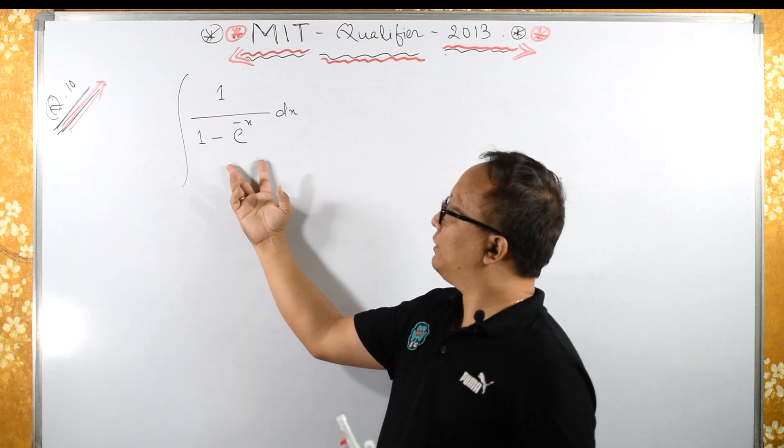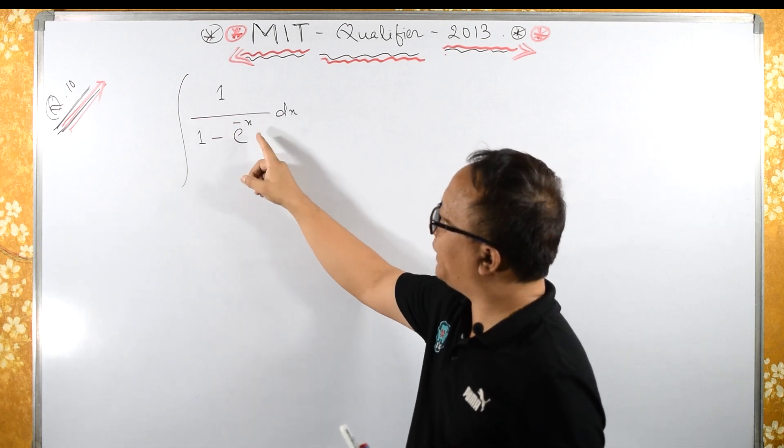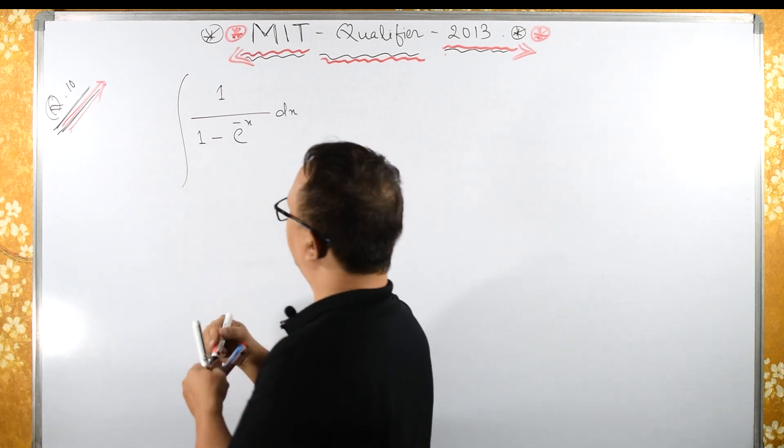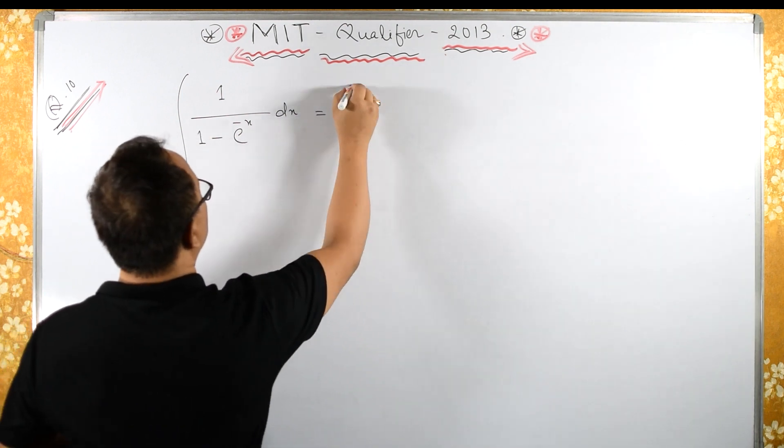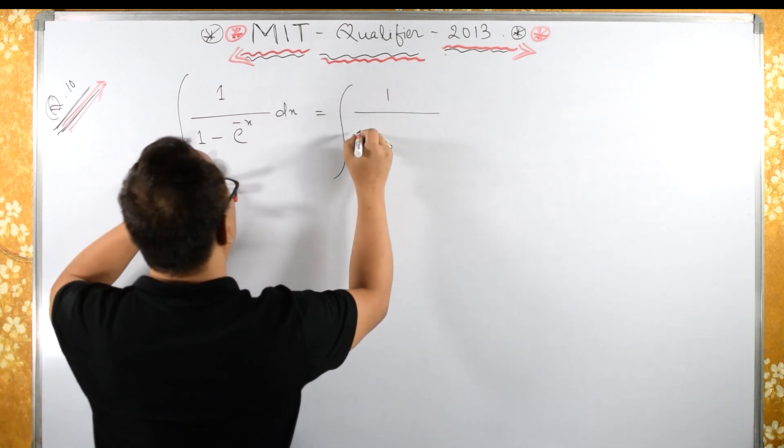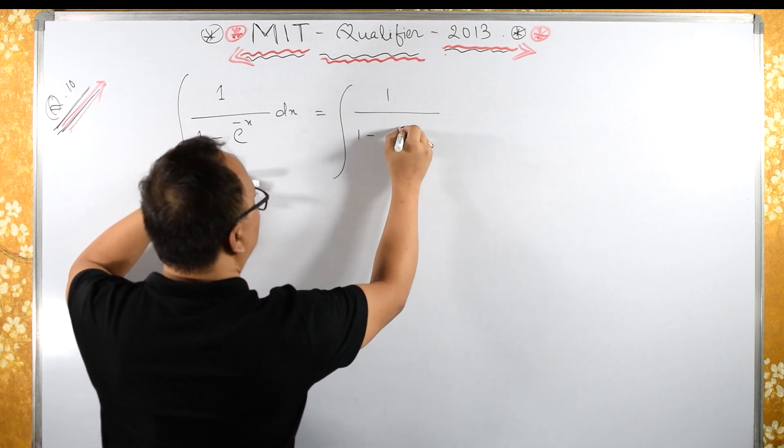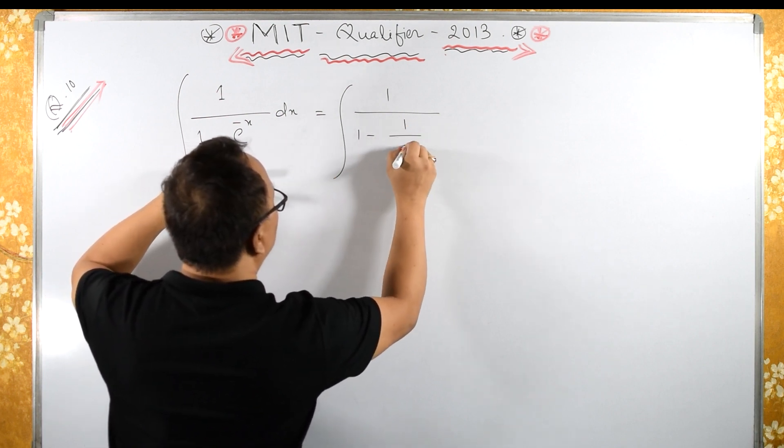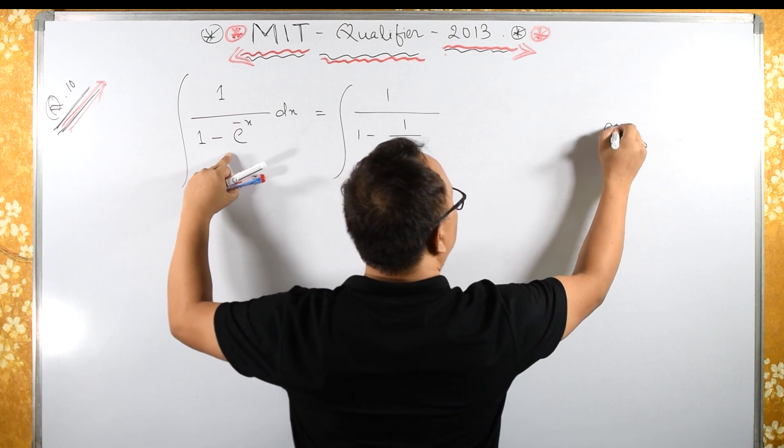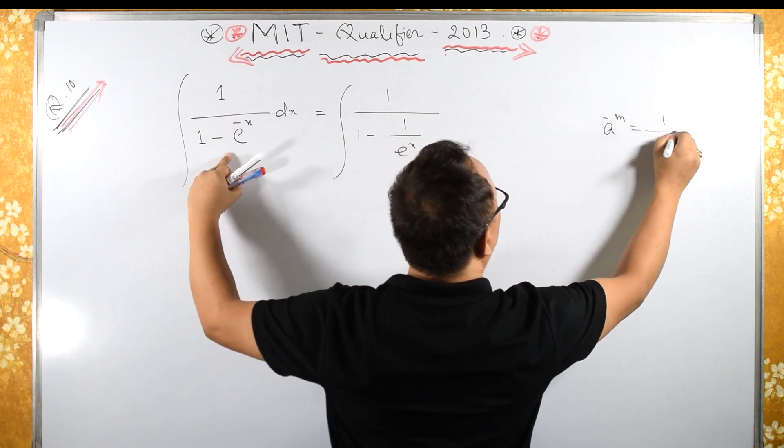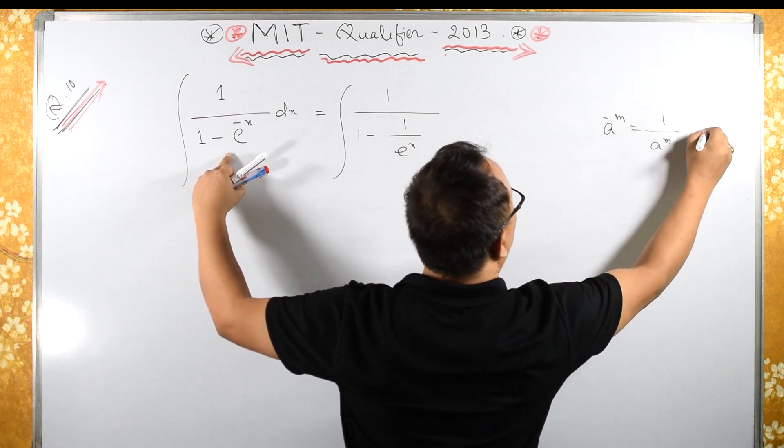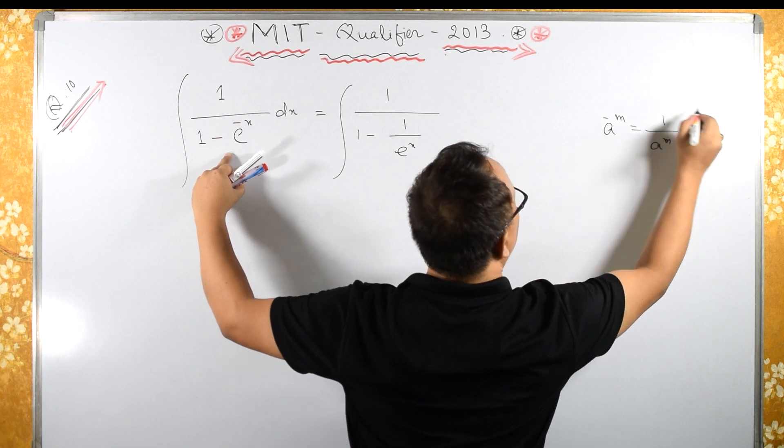This integral looks easy. So e raised to minus x over 1 minus e raised to minus x. This equals to 1 over 1 minus e raised to minus x, which is 1 over e raised to x. Because a raised to minus m is 1 by a raised to m, where m is greater than 0.